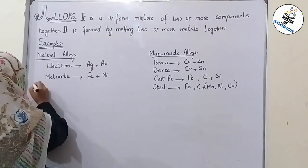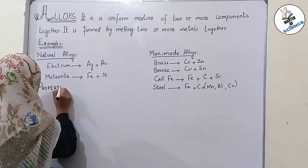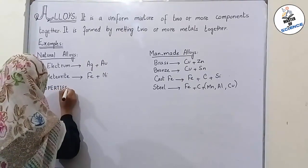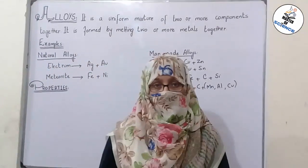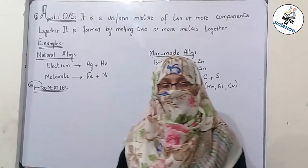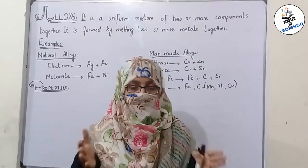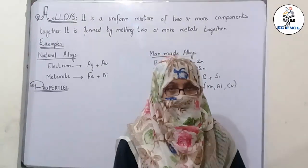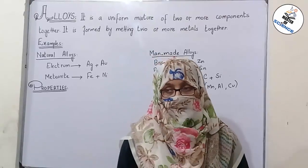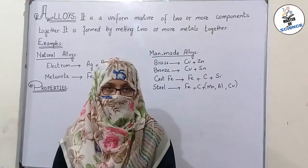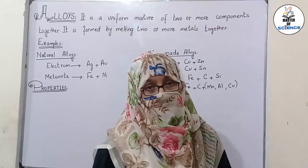Now we will discuss the properties of alloys. The properties of alloys are more enhanced compared to those of the corresponding individual metals. For example, individual metals are soft, but when an alloy is formed by mixing two or more metals, it becomes hard and more tough, with greater strength, tensile strength, and durability. Most importantly, it is corrosion resistant — it does not corrode as readily as individual metals.